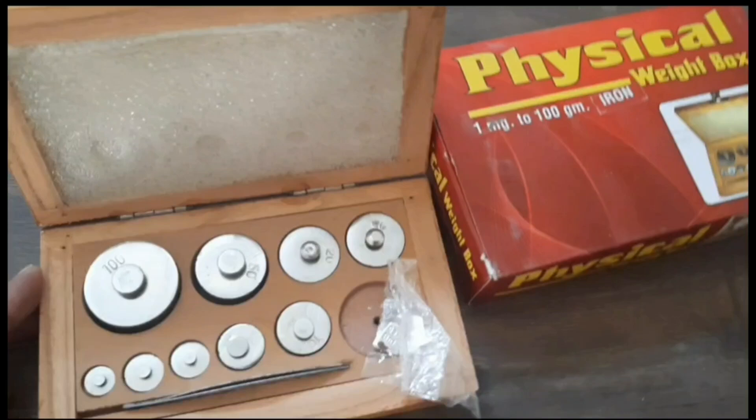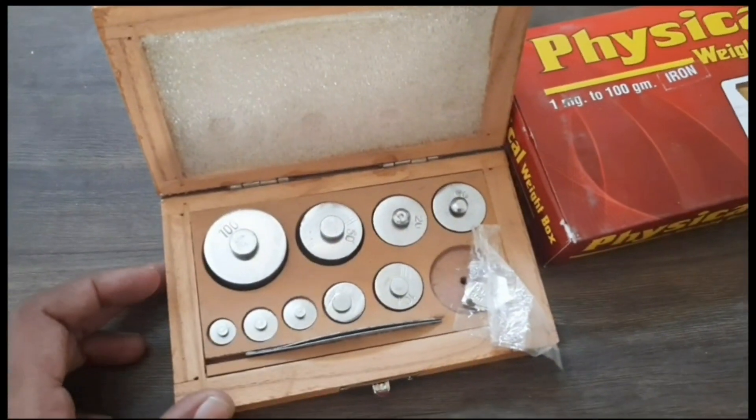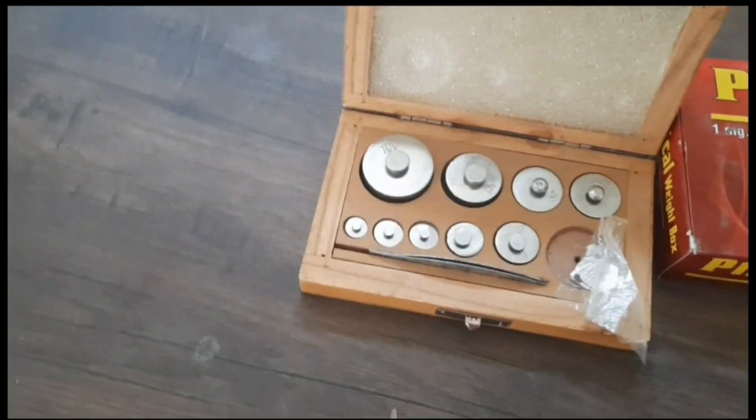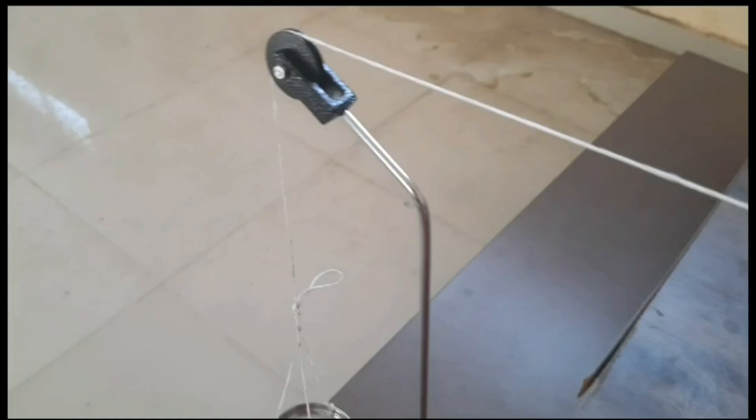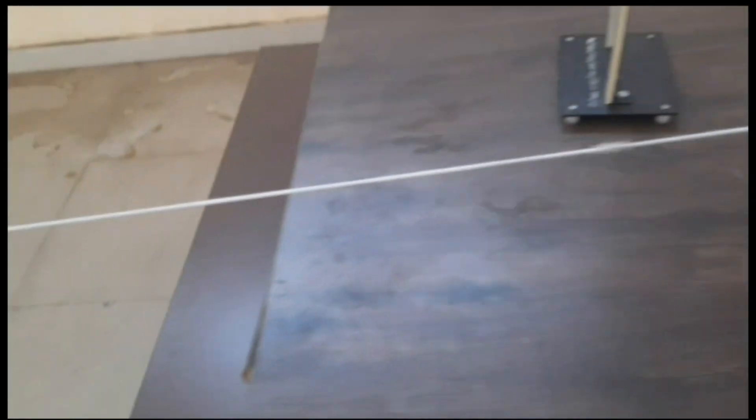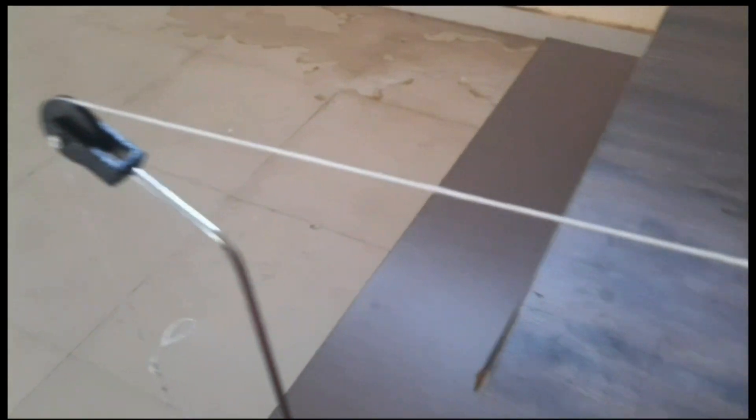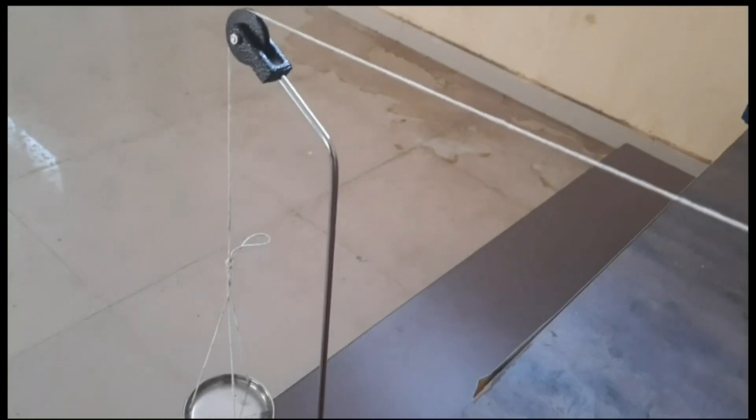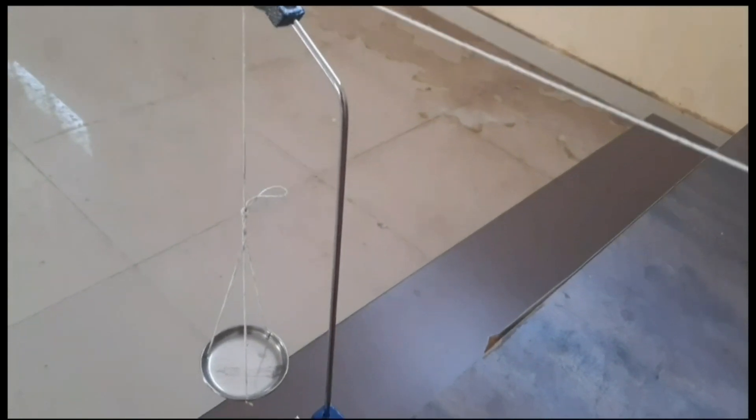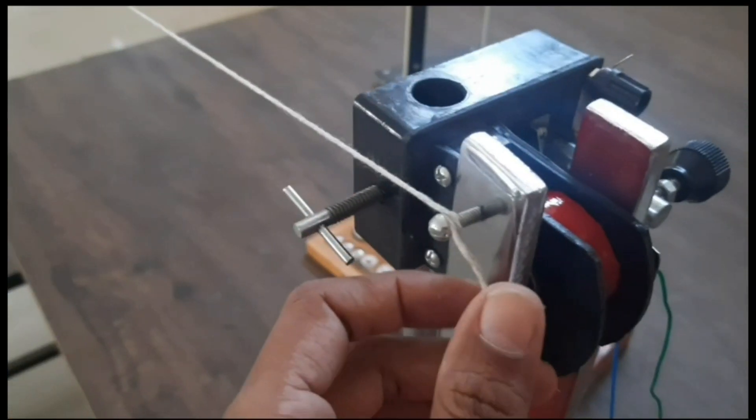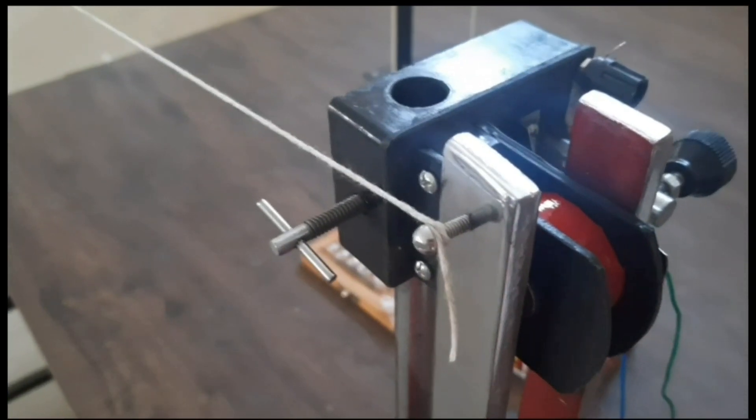Here are the weights, we have weights up to 100 grams. Here is the pulley where we have to hang this weight pan. We require the thread which should be connected across this pulley where we have attached the weight pan, and then we should connect it to the screw of the tuning fork.